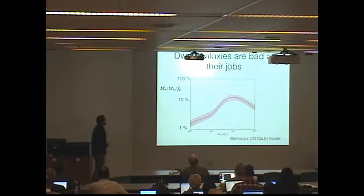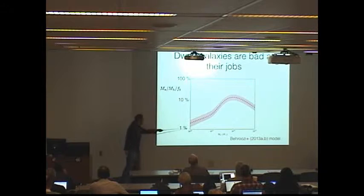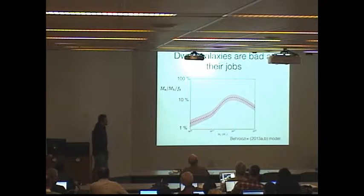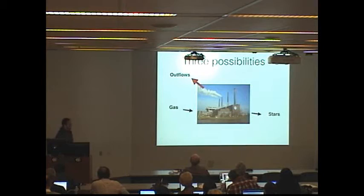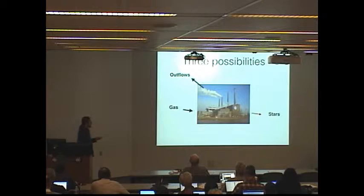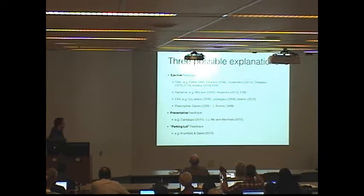If you look at dwarf galaxies in the 10^10 halo mass range and lower, their stellar mass relative to their baryon supplies is quite small. There are three general ways you can address this. One is you can make outflows very strong. One is you can decrease the supply of gas. And the third way is you can say that the gas goes in, but it hangs around for a long time before forming stars.